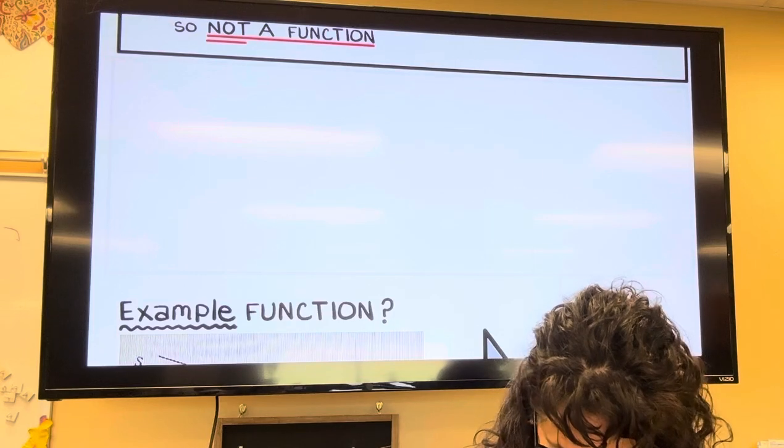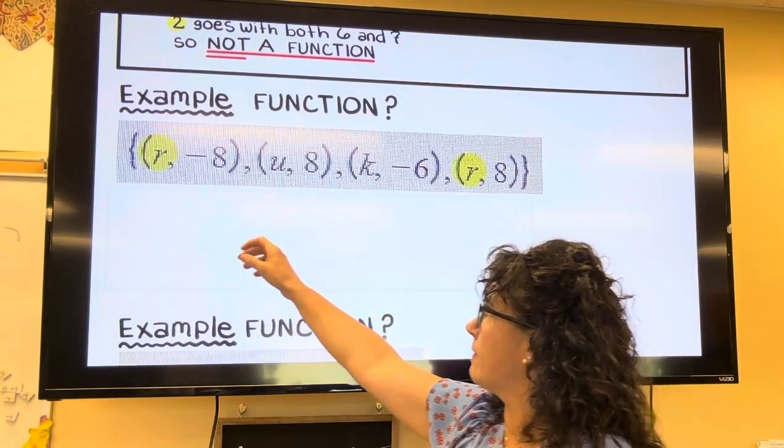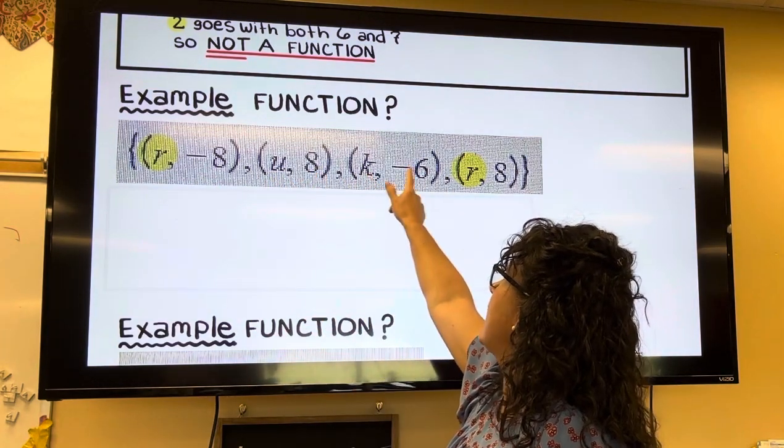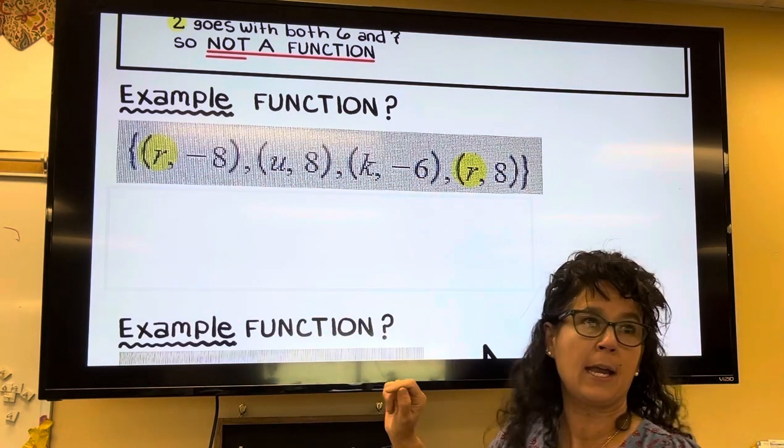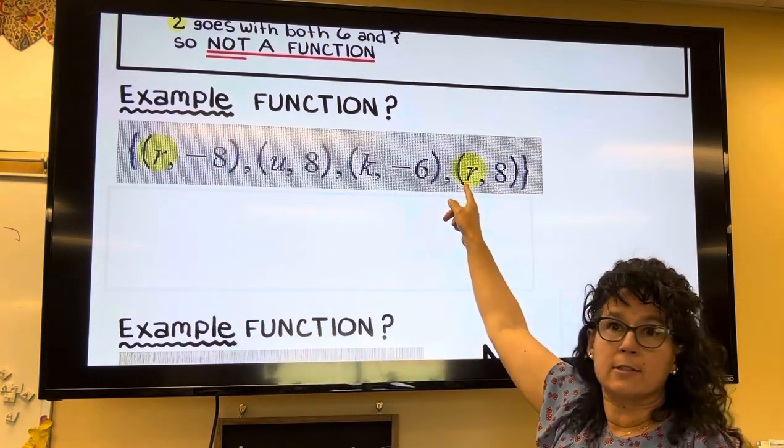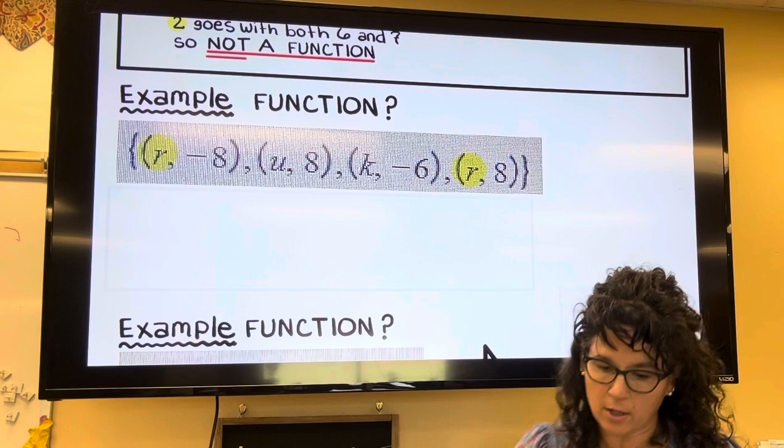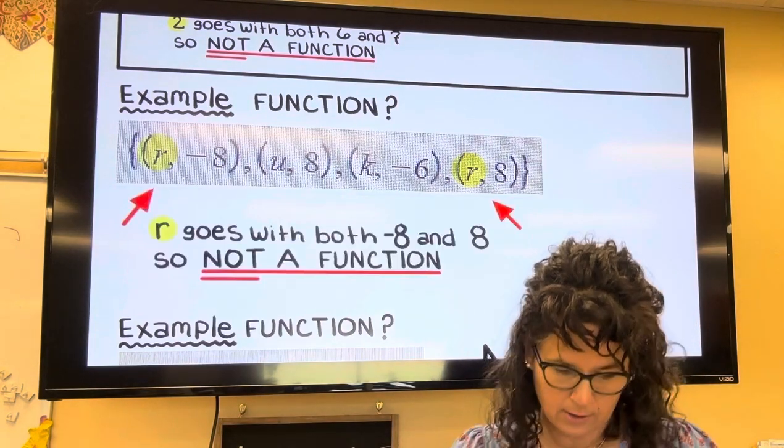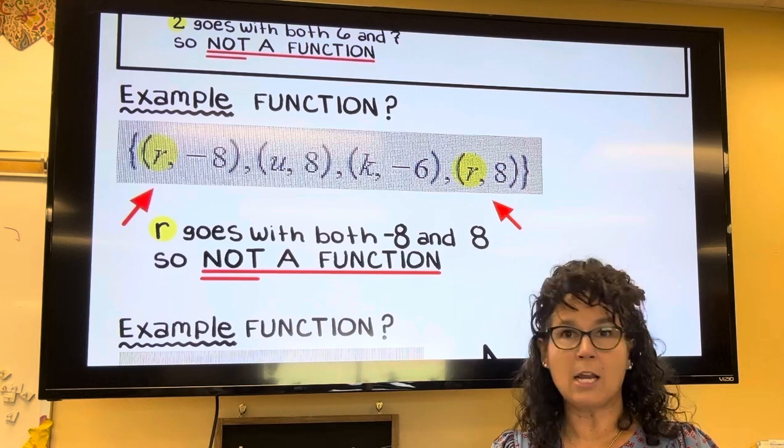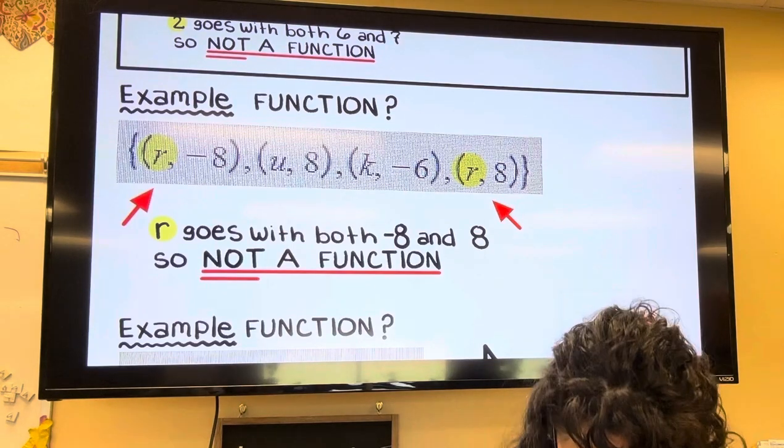Okay, so then let's look at a couple of quick examples here. In this one here, notice I have the coordinate r comma negative 8, u comma 8, k comma negative 6, and r comma 8. When I have these points, the x's are the same—the r's, r and r—so that means that it is not a function. Same x, no.